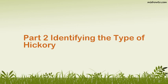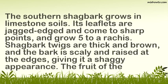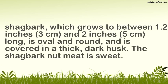Part 2: Identifying the Type of Hickory. Step 1: Identify a Southern Shagbark Hickory (Carya carolinae-septentrionalis). The southern shagbark grows in limestone soils. Its leaflets are jagged-edged, come to sharp points, and grow five to a rachis. Shagbark twigs are thick and brown, and the bark is scaly and raised at the edges, giving it a shaggy appearance. The fruit grows to between 1–2 inches long, is oval and round, and is covered in a thick, dark husk. The shagbark nut meat is sweet.